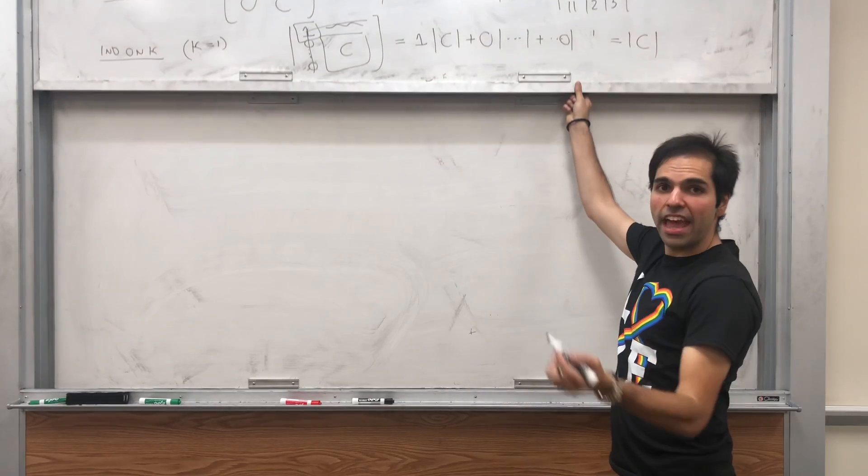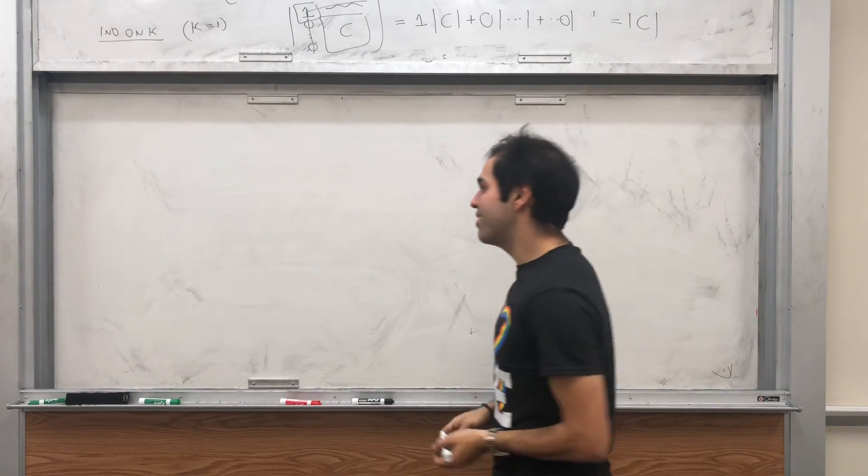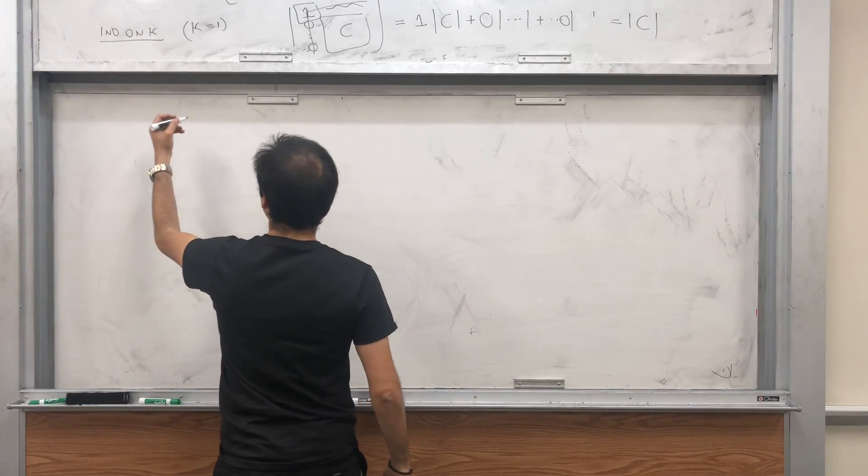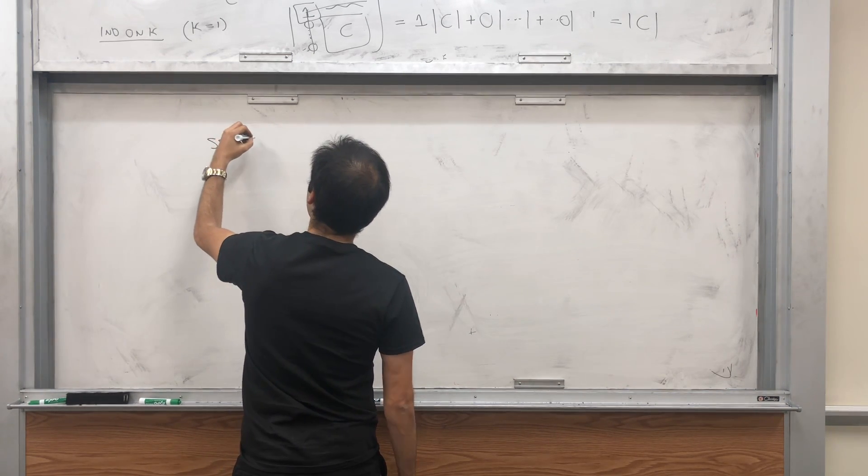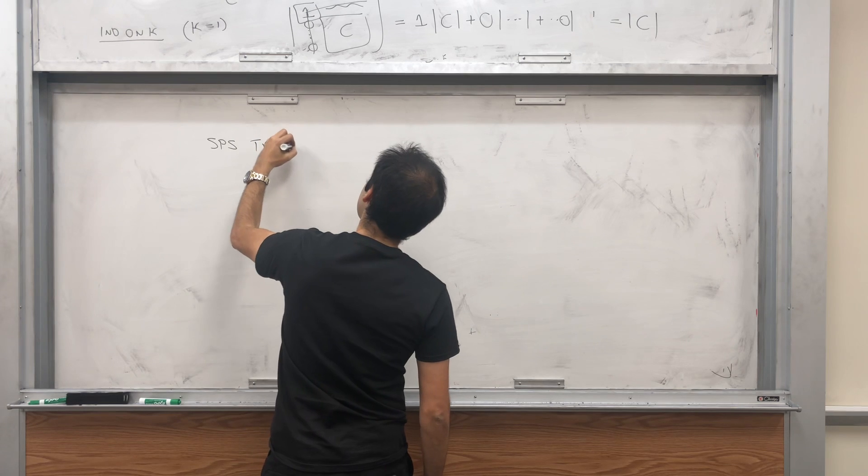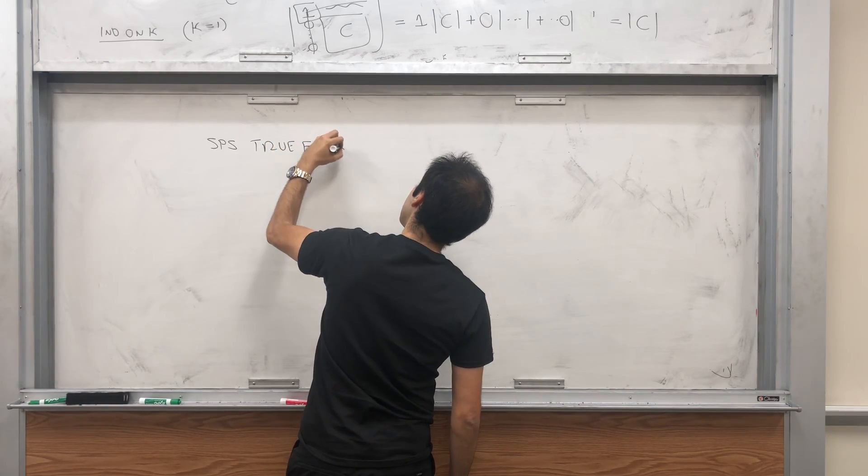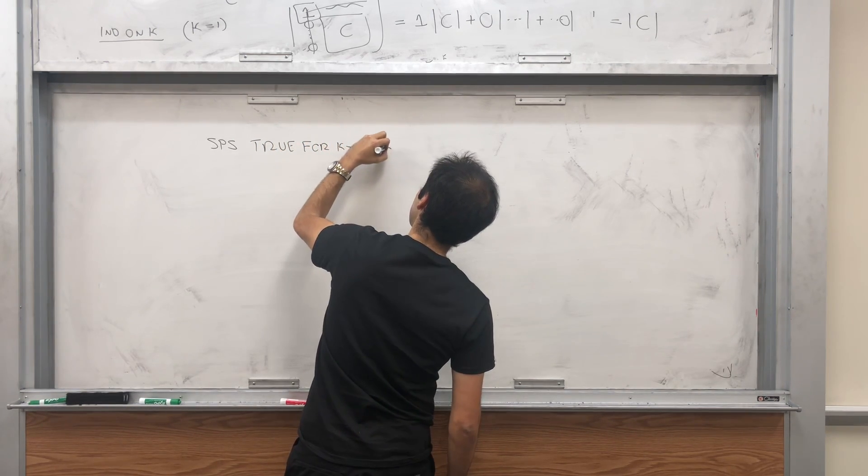Now what if k is greater than 1? Then the approach is entirely the same. So suppose true for k minus 1, show true for k.